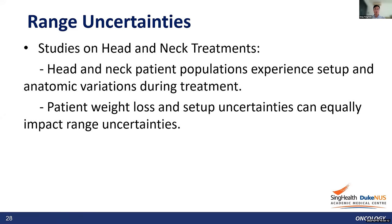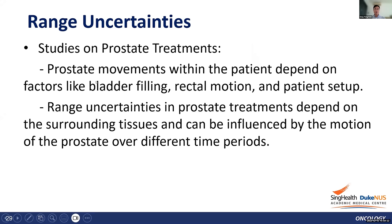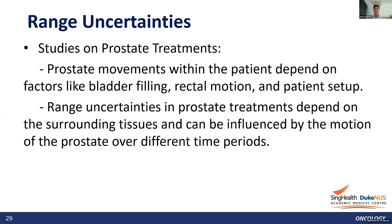Patient weight loss and setup uncertainties equally impact range uncertainty. For prostate treatment, prostate movement depends on bladder filling, rectal motion, and patient setup. Range uncertainties depend on surrounding tissues and prostate motion over time. In prostate proton therapy, we typically use two bilateral beams hitting the femoral heads, so femoral head position also changes the proton beam range and must be accurately addressed for imaging and positioning.